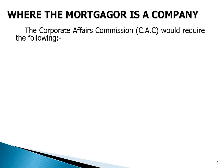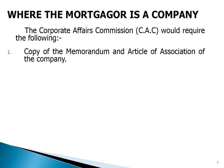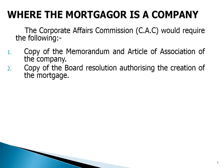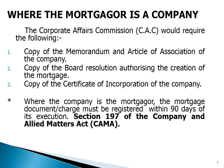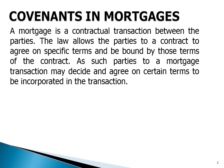Where the mortgagor is a company, the computer affairs commission will require the following: one, copy of the memorandum and articles of association of the company; two, copy of the board resolution authorizing the creation of the mortgage; three, copy of the certificate of incorporation of the company. Where the company is the mortgagor, the mortgage documents or charge must be registered within 90 days of its execution — Section 197 of the Companies and Allied Matters Act.